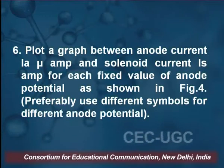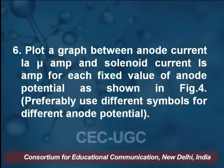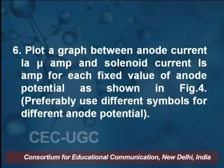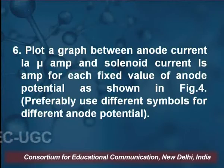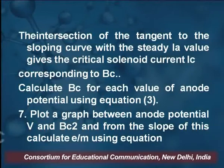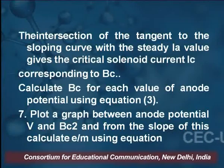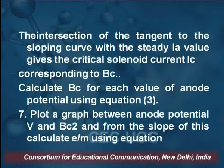After getting the readings, we plot a graph between the anode current Ia in microamperes and the solenoid current Is in amperes for each fixed value of the anode potential: 2 volts, 3 volts, and 4 volts, represented by different symbols. The intersection of the tangent of the slope curve with the steady Ia value gives the critical solenoid current Ic, corresponding to Bc, the critical magnetic field.